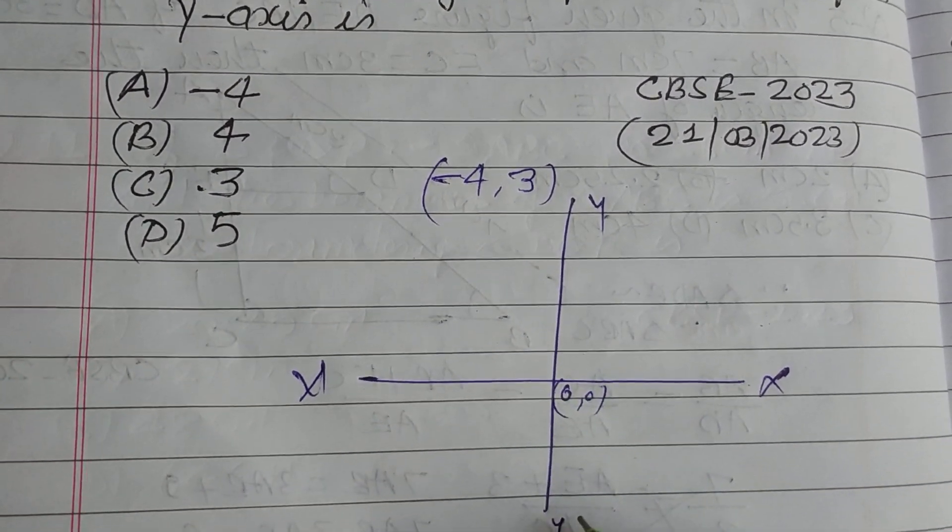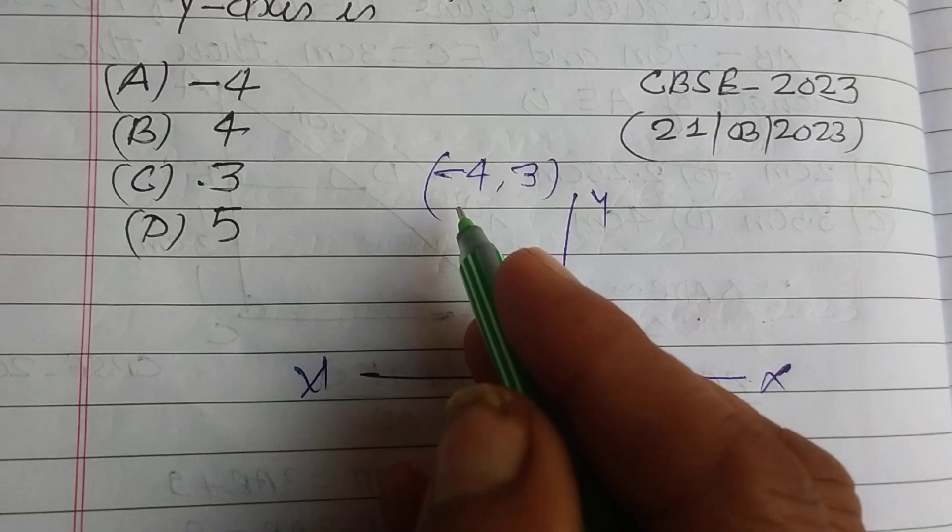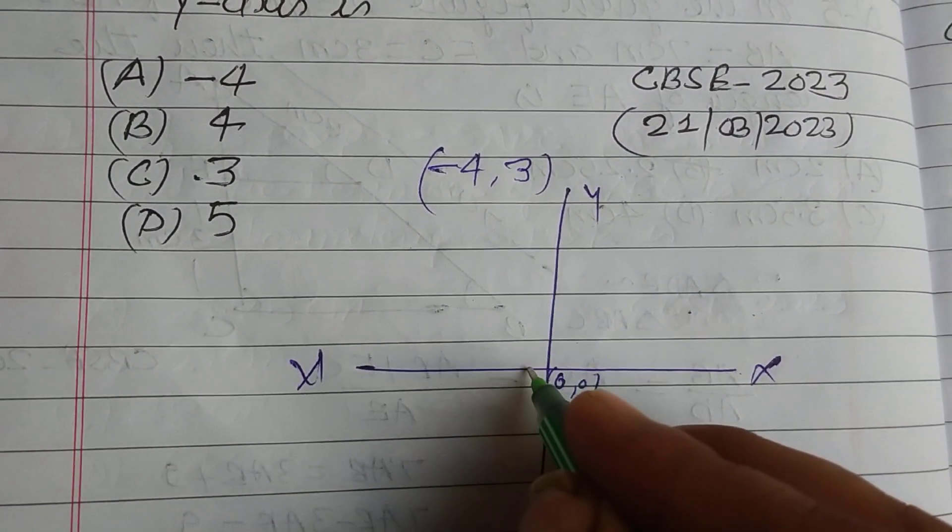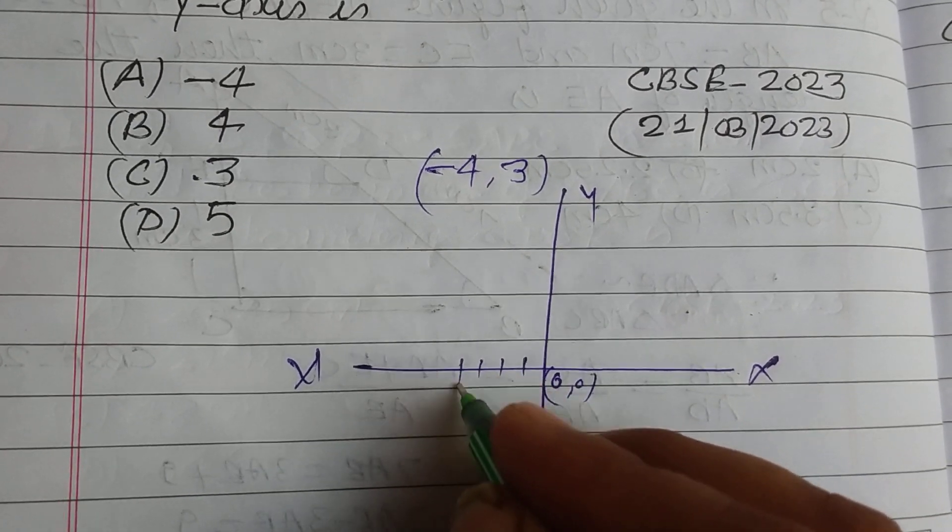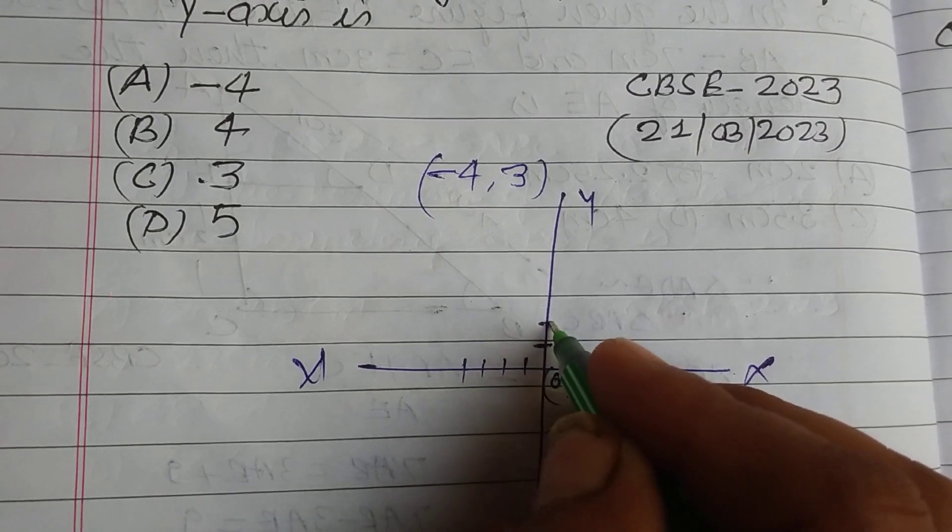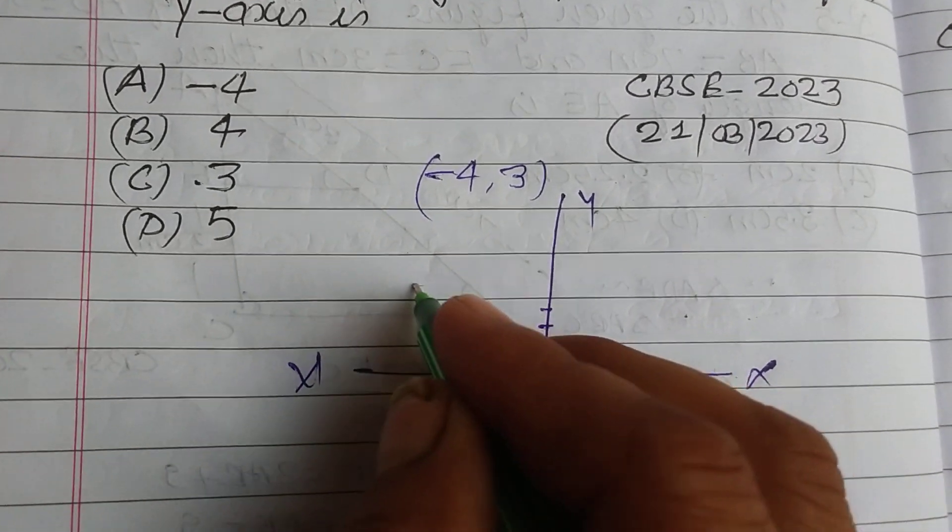So -4 and 3. Minus 4 is: 1, 2, 3, 4. And 3 is positive, so we take 1, 2, 3. So this is the point (-4, 3), which is in the second quadrant.